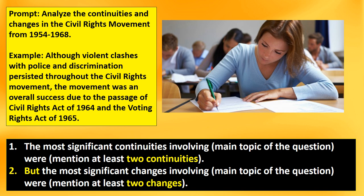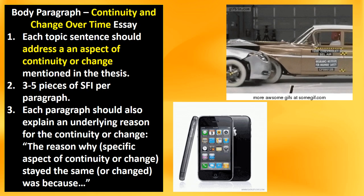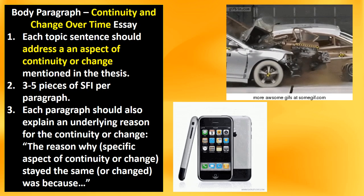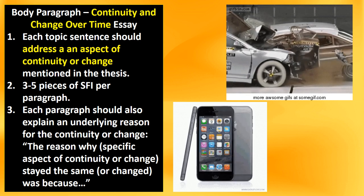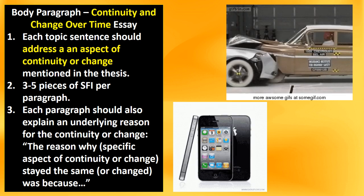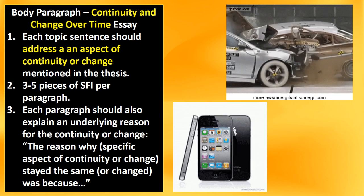Here's a prompt on the Civil Rights Movement. Start off with a counter argument: although violent clashes with police and discrimination persisted throughout the Civil Rights Movement, the movement was an overall success due to the passage of the Civil Rights Act of 1964 and the Voting Rights Act of 1965. Again, you're talking about what is the more significant part. For body paragraphs on continuity and change over time, each topic sentence should address an aspect of continuity or change, and same thing — three to five pieces of SFI key terms — and you should be in pretty good shape.